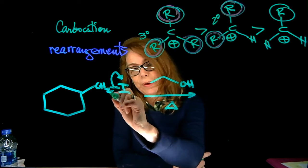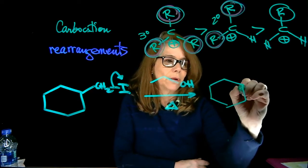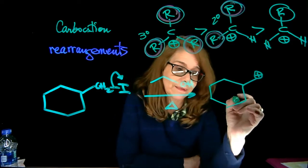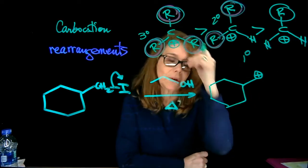As indicated by the arrow, let's propose that we have the loss of a leaving group and that we form the following carbocation. Now notice, the carbocation here is primary, which is not stable, it's not a good carbocation.